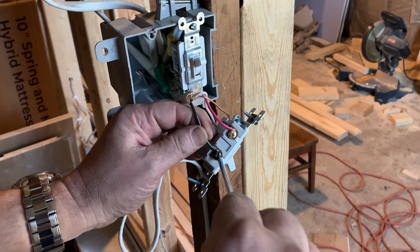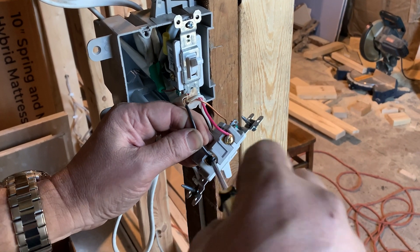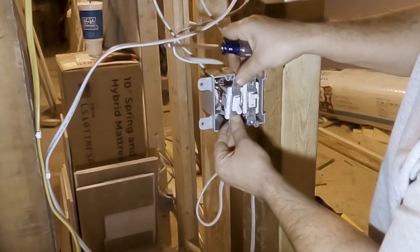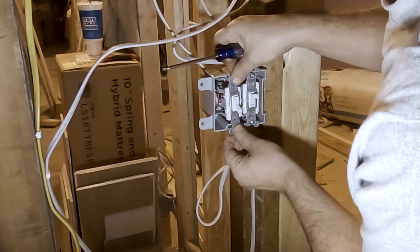At the second switch, we terminate the remaining black wire to the common terminal screw which is black in color. We are now done with the second switch and we can set it back into its box.